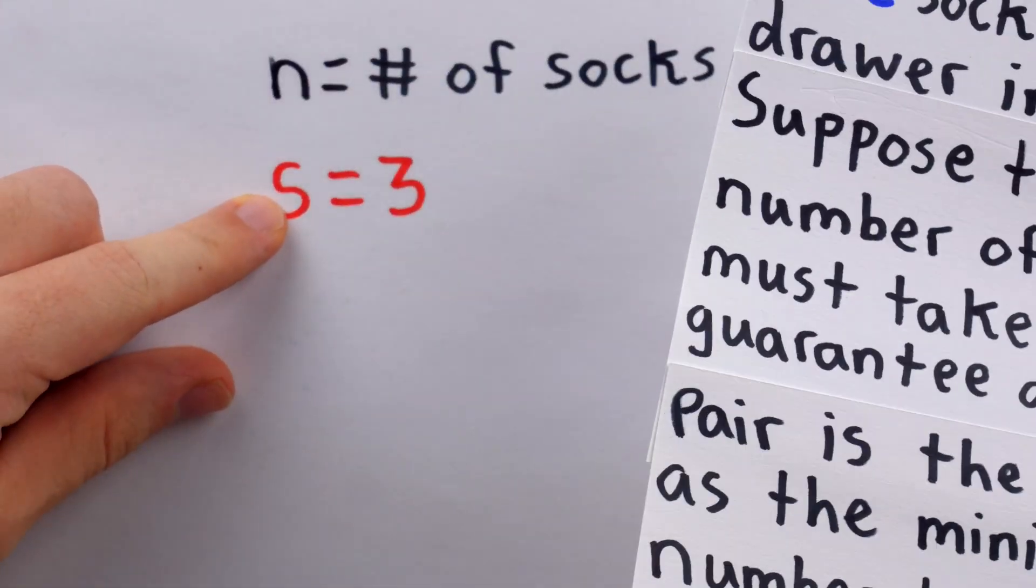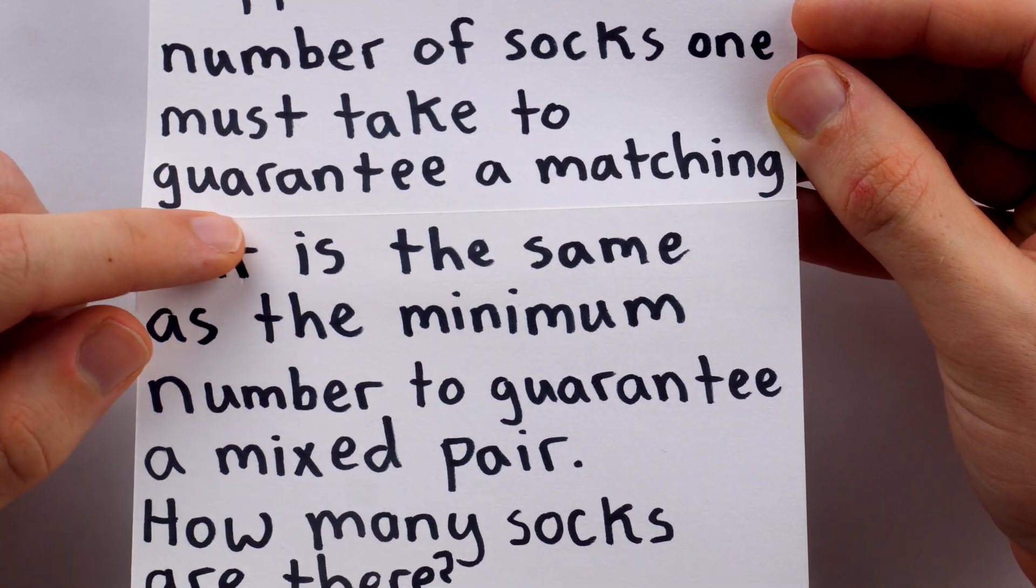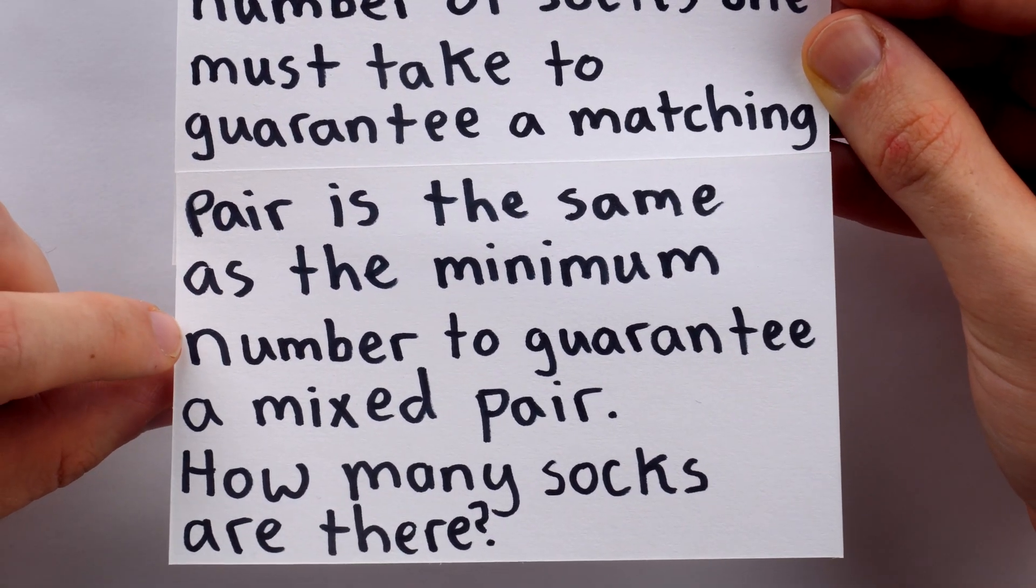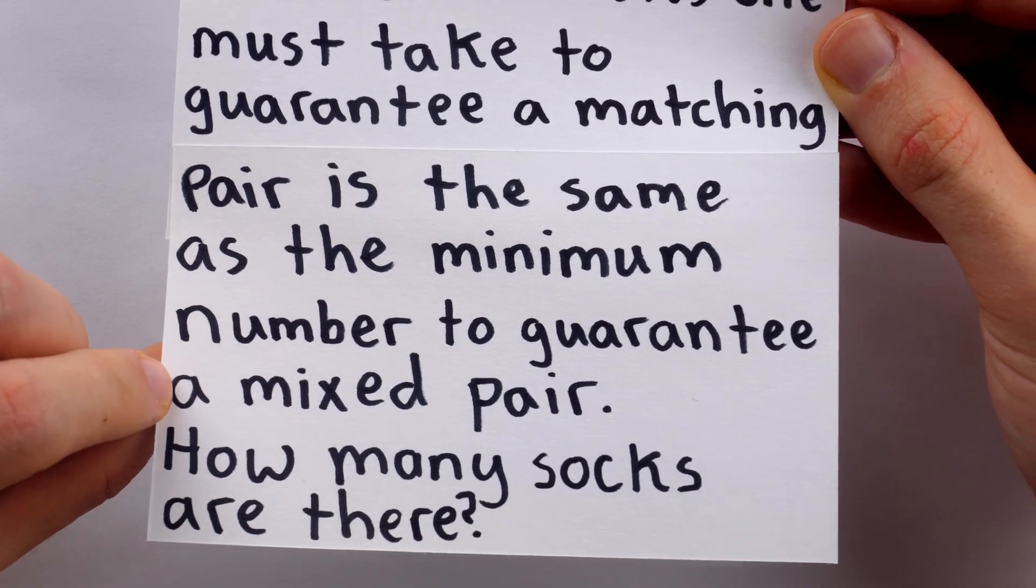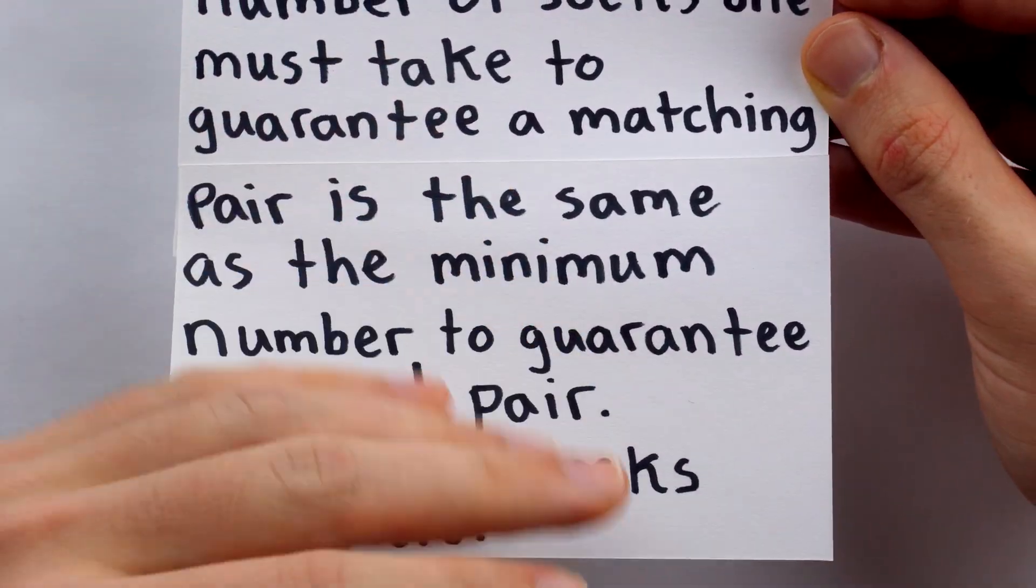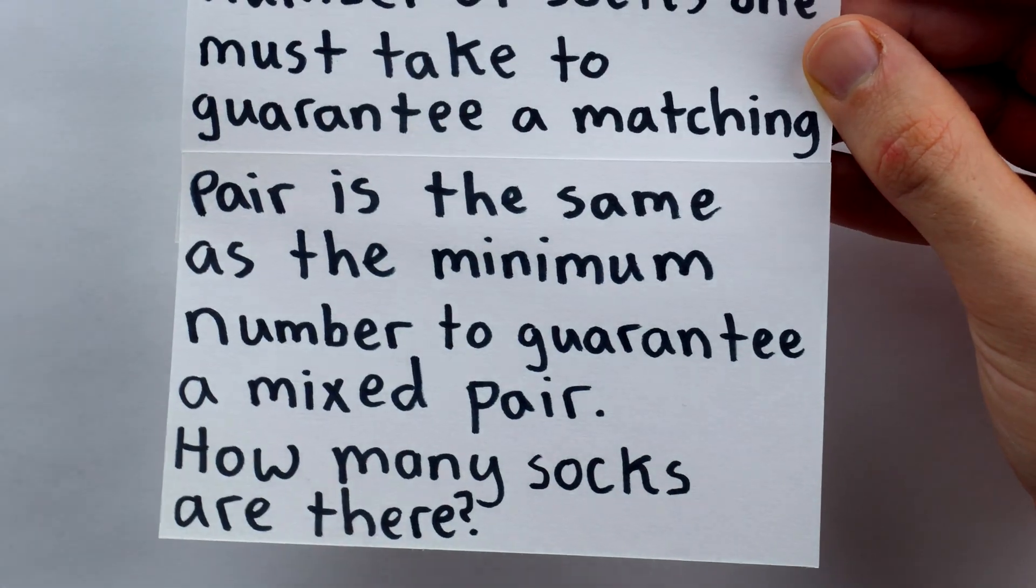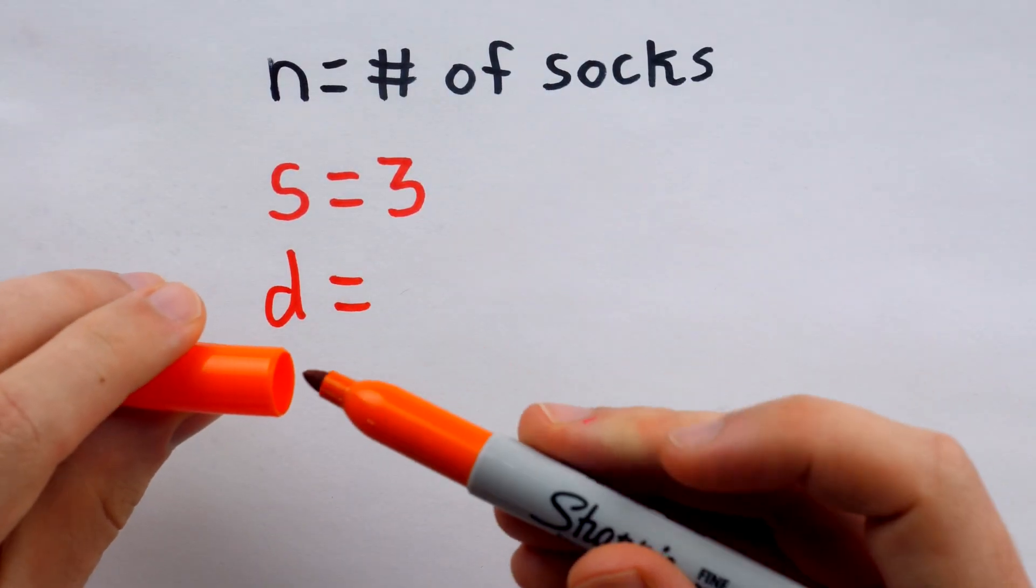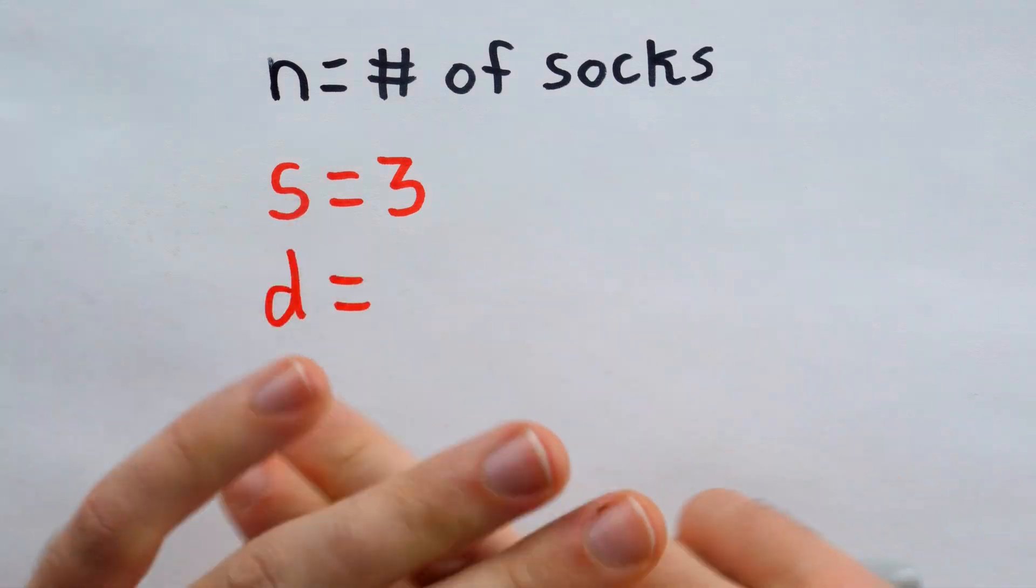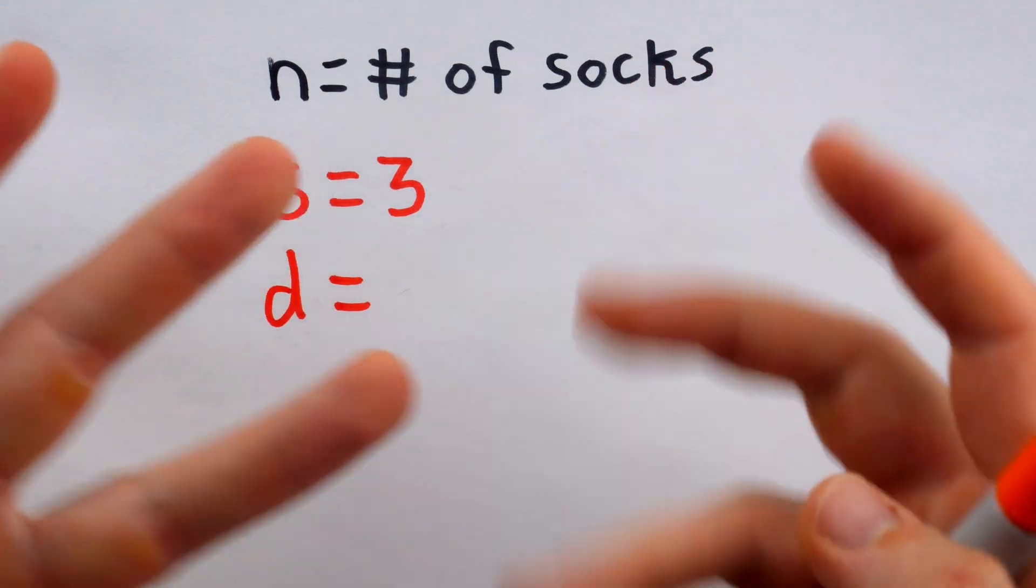Next key detail. This number, which we now know is three, is the same as the minimum number to guarantee a mixed pair. Okay, so the number of socks that we would need to take to guarantee that we have two socks of differing color, that has to be equal to three.